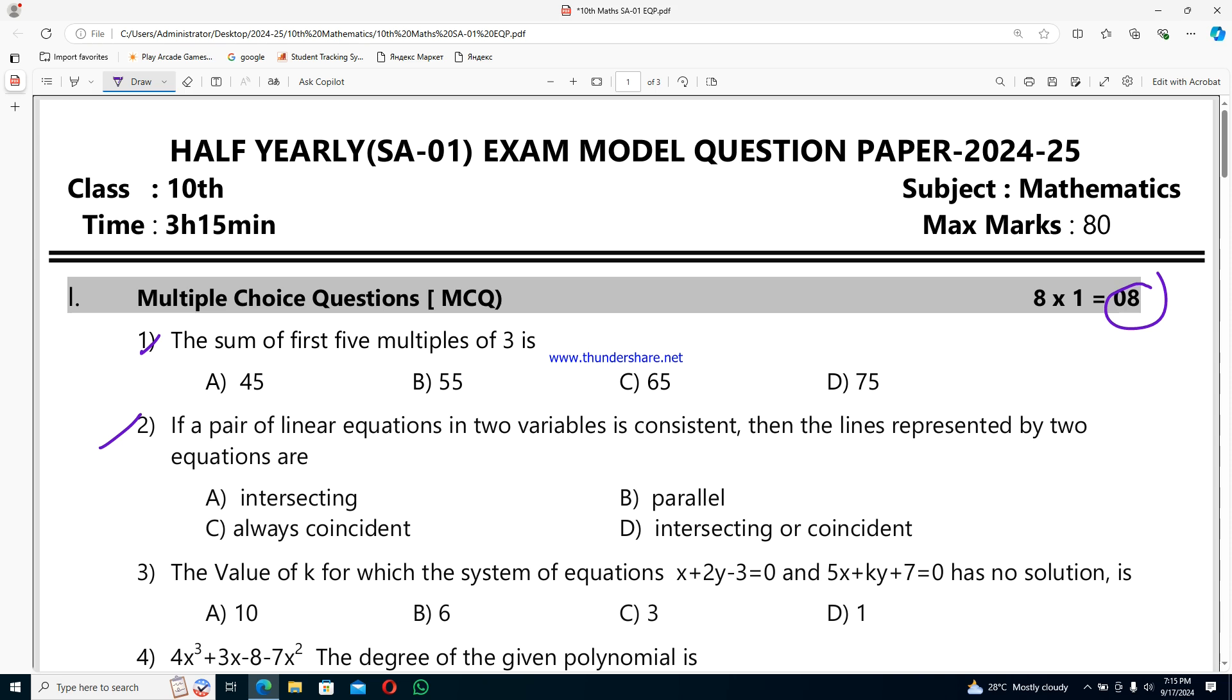consistent, then the lines represented by two equations are option A intersecting, option B parallel, option C always coincident, and option D intersecting or coincident.